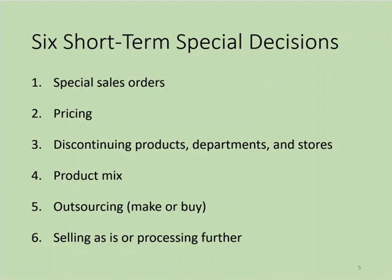Here are some examples of short-term decisions managers can make: whether or not to accept a special order, pricing issues, discontinuing products or stores, what type of product mix to use, outsourcing — whether to make a product or buy it from someone else — or whether to sell or process further. As you study these, keep in mind the two keys: to be relevant, a cost must both occur in the future and differ between alternatives.